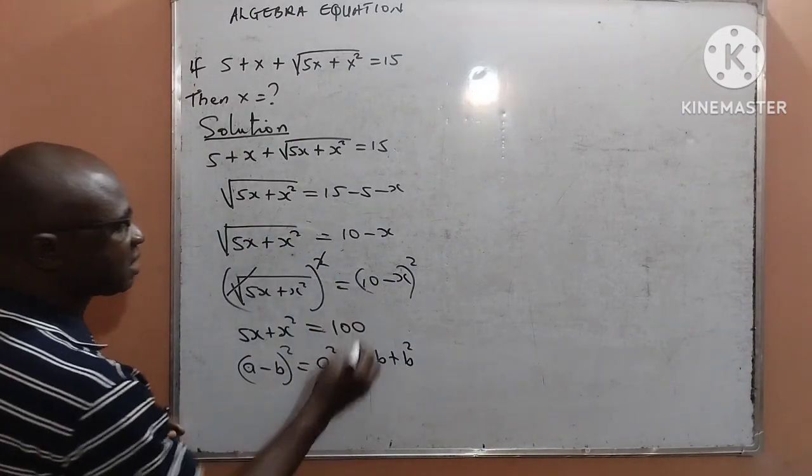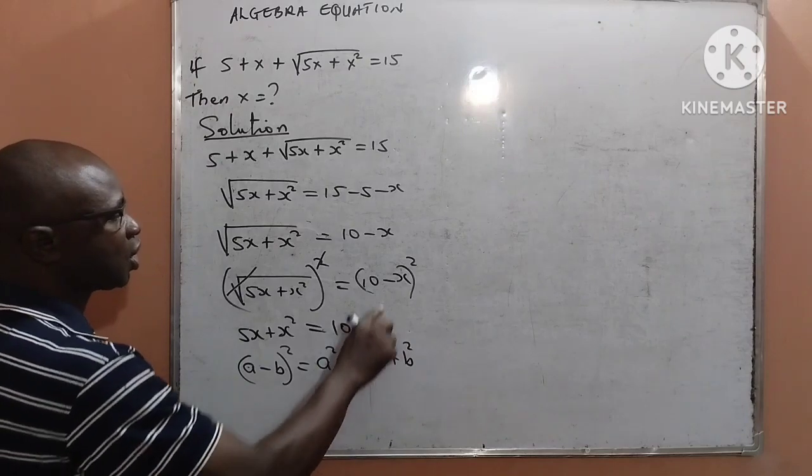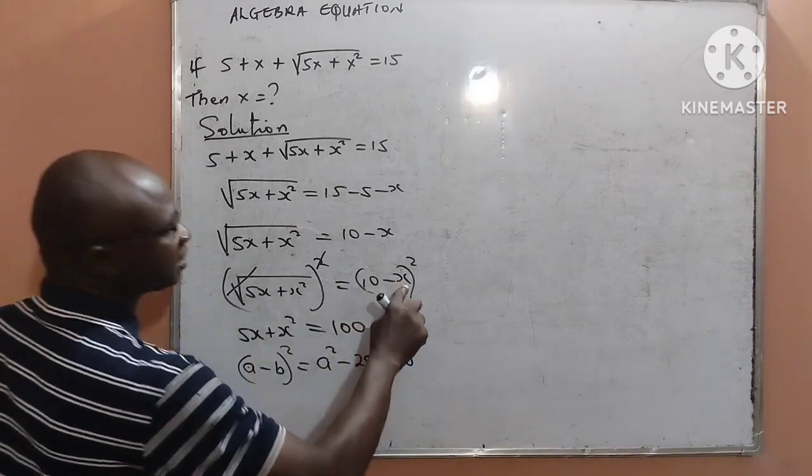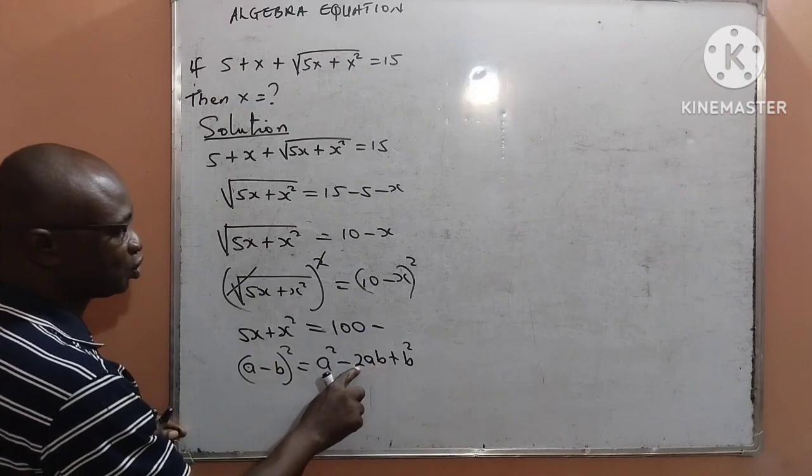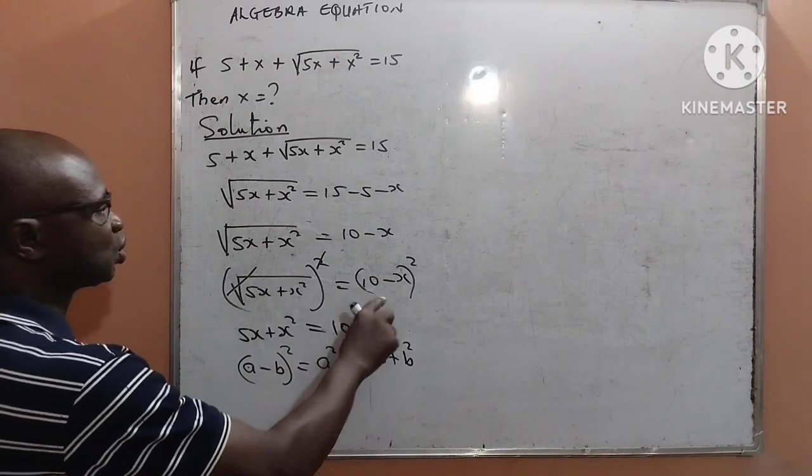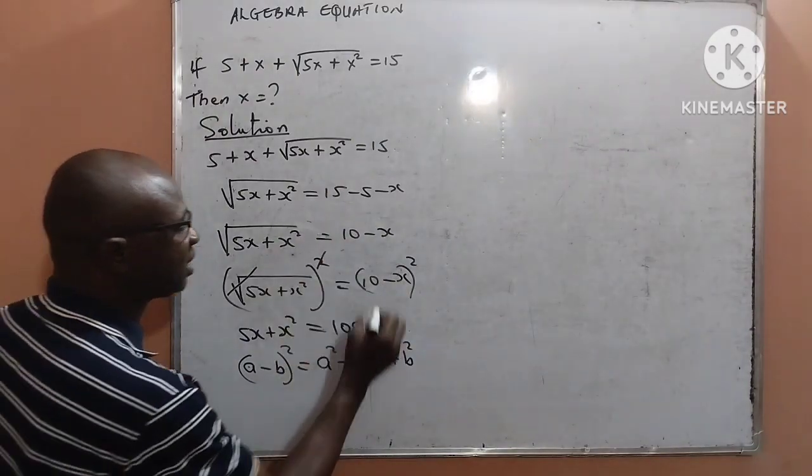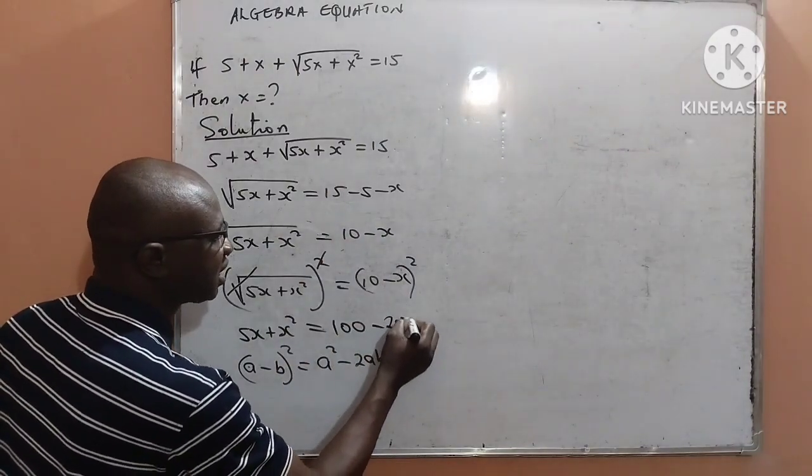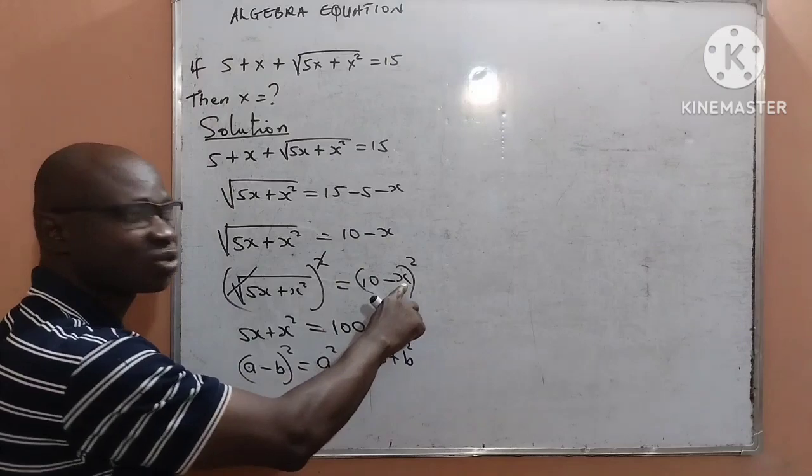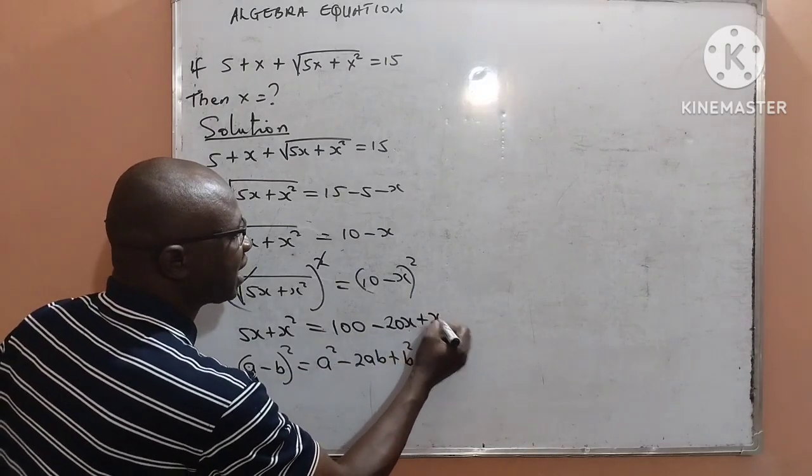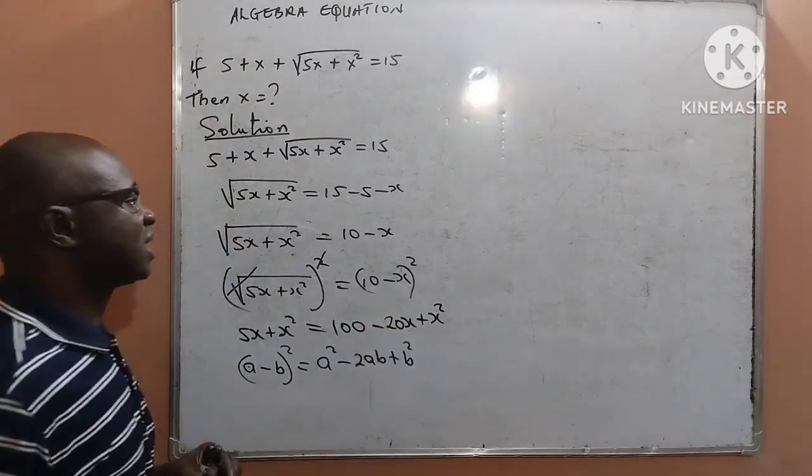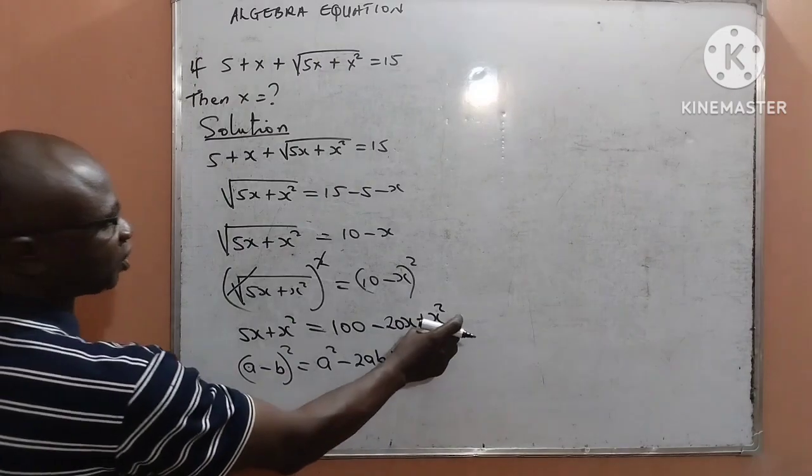Then minus 2 multiplying 10 multiplying x. 2 multiplied by 10 is 20 multiplied by x will give me minus 20x. And finally x squared will give me x raised to the power 2.